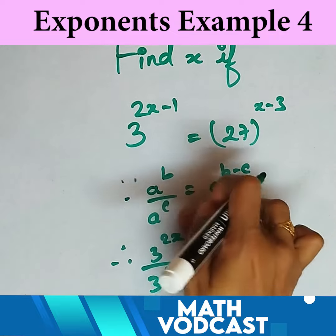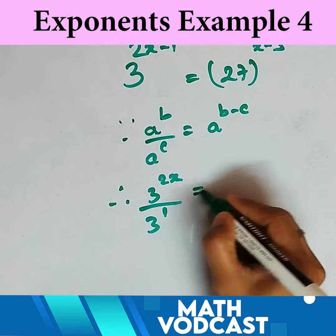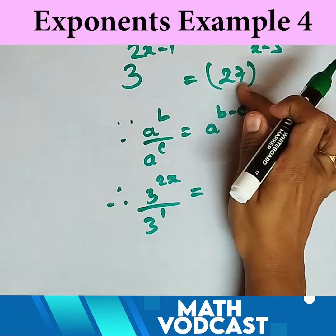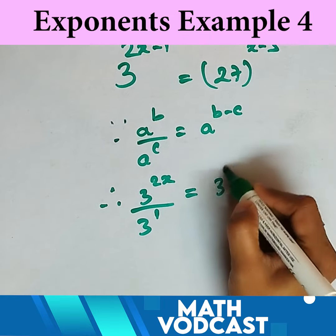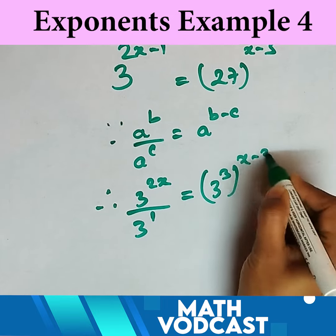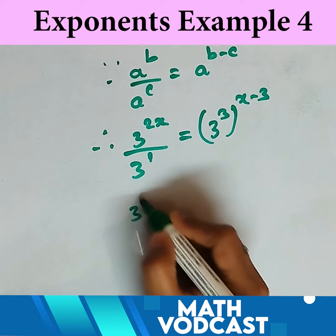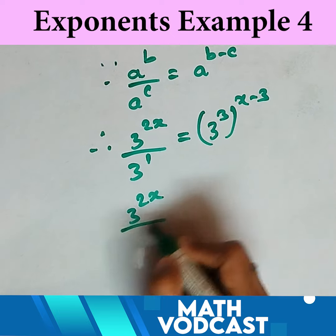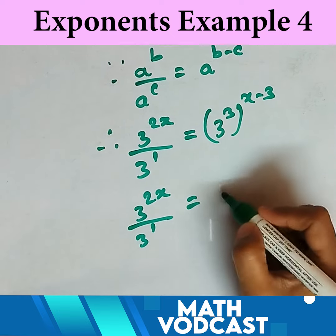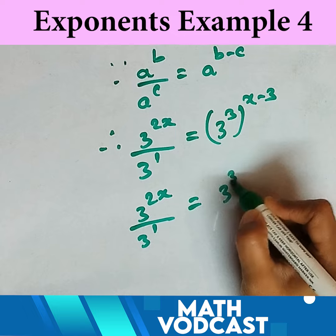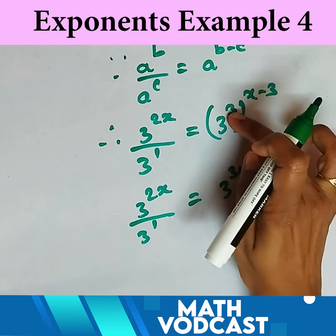Substituting this formula, we write 27 as 3 cubed, so 27 raised to (x minus 3) becomes 3 cubed raised to (x minus 3). The left side remains 3 raised to 2x upon 3 raised to 1, which equals 3 raised to 3x.